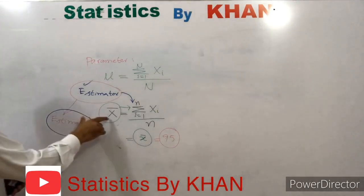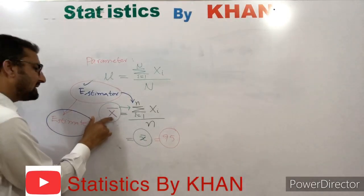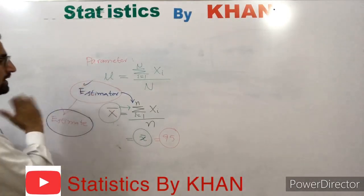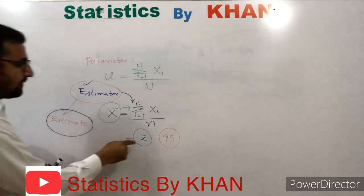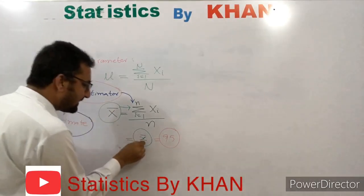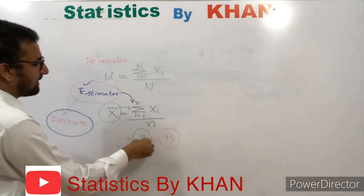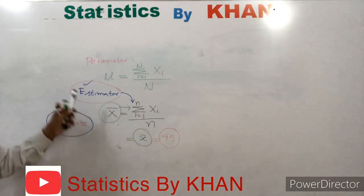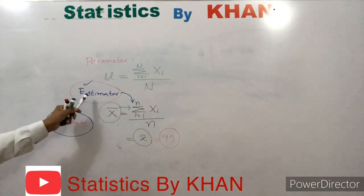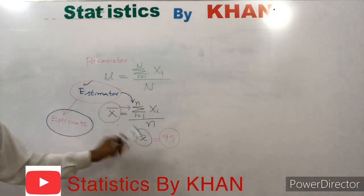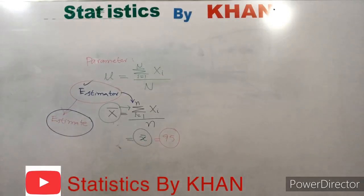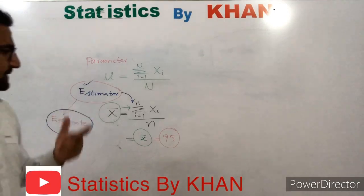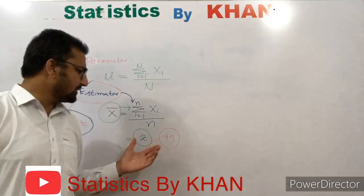In terms of notation, the estimator may be represented by capital X-bar, while the estimate is represented by small x-bar. So capital X-bar is the estimator and small x-bar is the estimate.